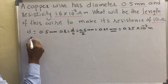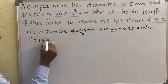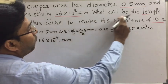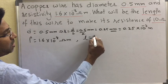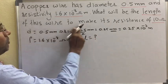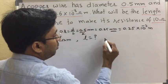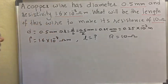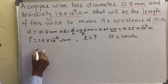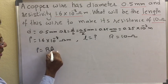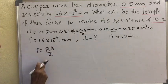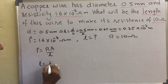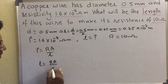Resistivity rho is given as 1.6 into 10 power of minus 8 ohm meter. We have to find the length L. Resistance R is 10 ohms. Using the basic resistivity formula rho equal to R A by L, since we need L, we rearrange to get L equal to R A by rho.